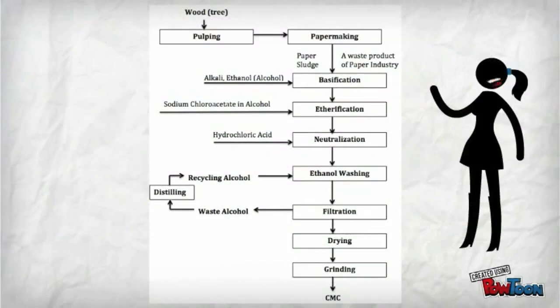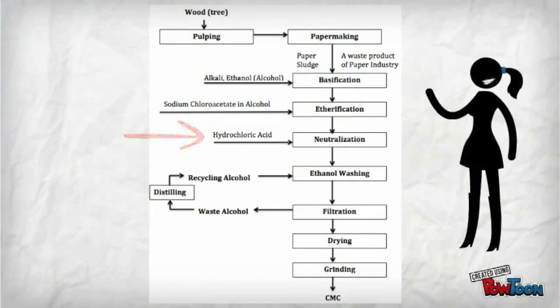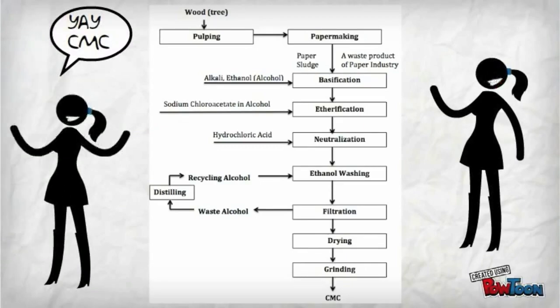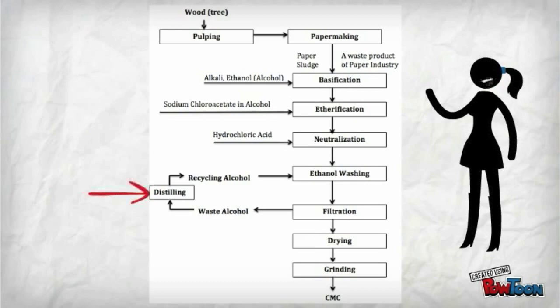After etherification, the resulting solution is combined with a dilute acid, following which the solid content is separated from the liquid content via filtration. The solid content is then dried and ground to produce CMC, and the liquid content is recycled.